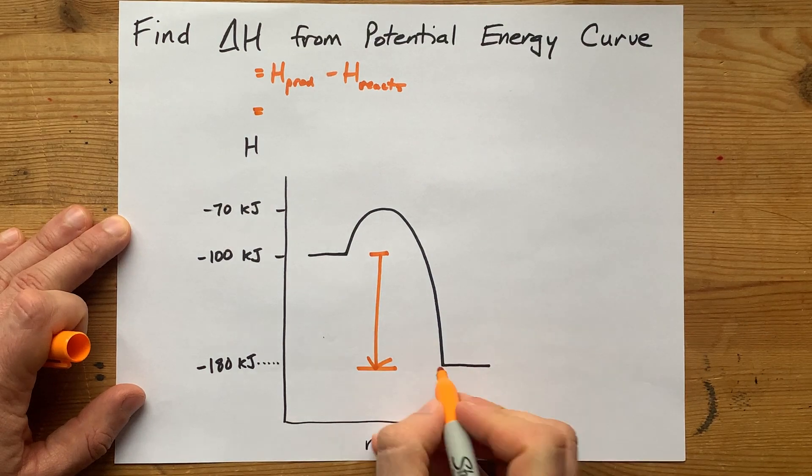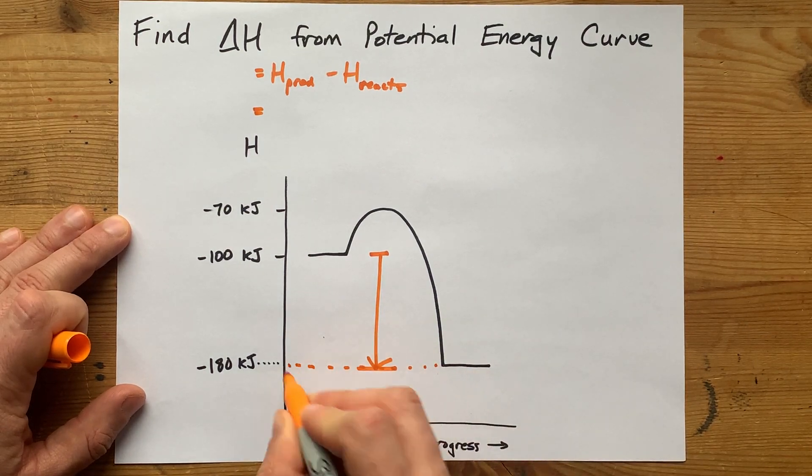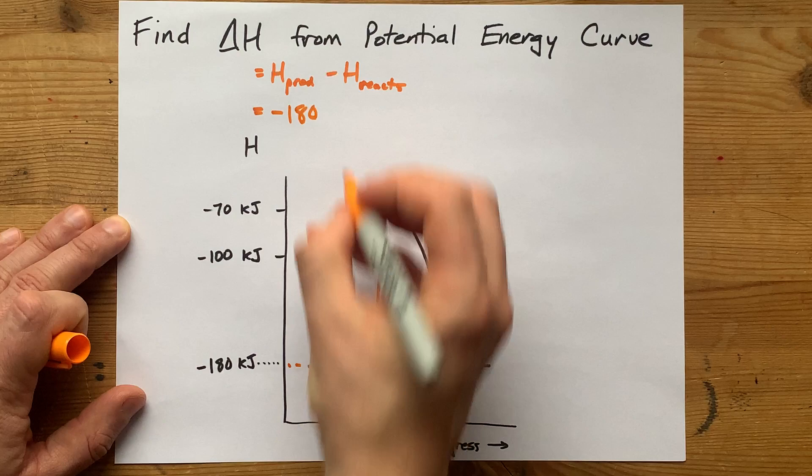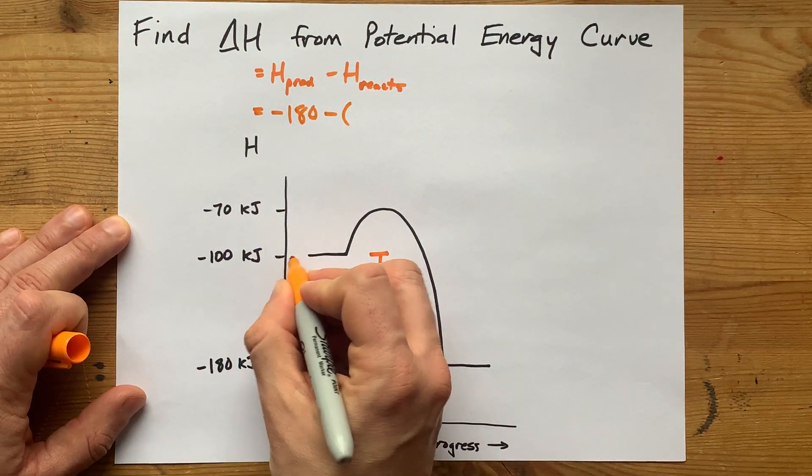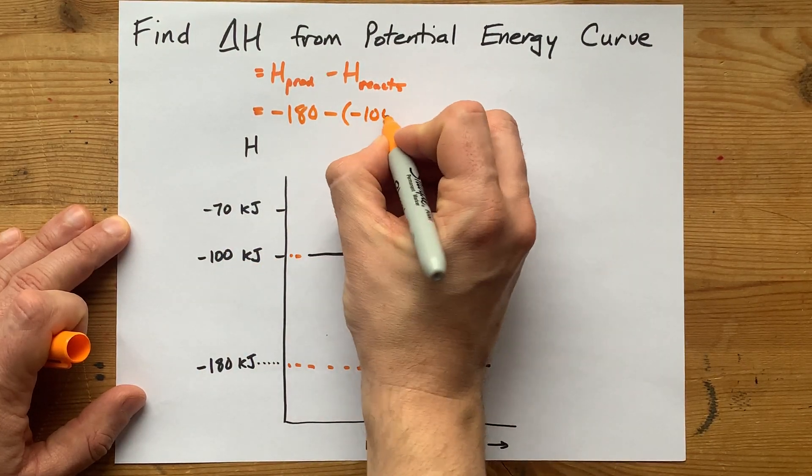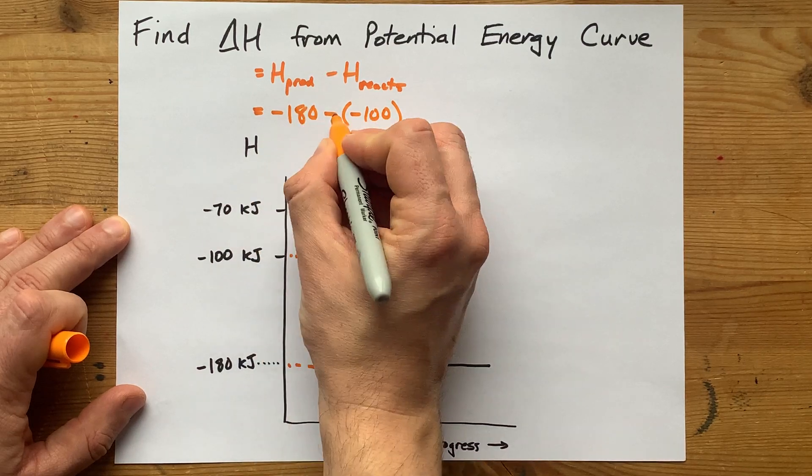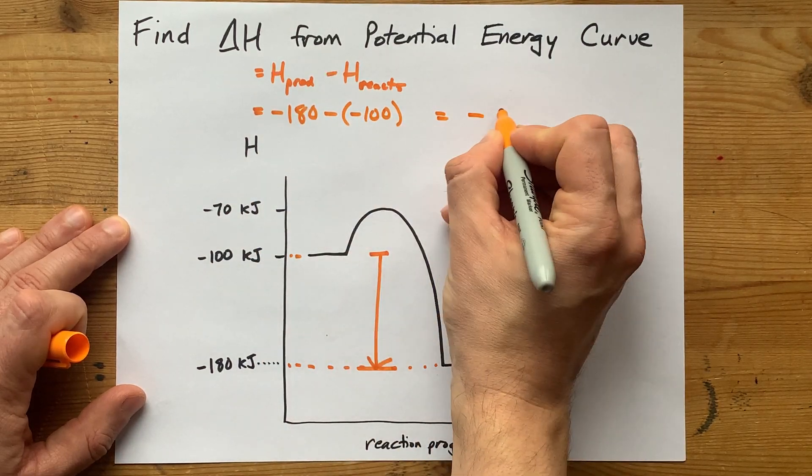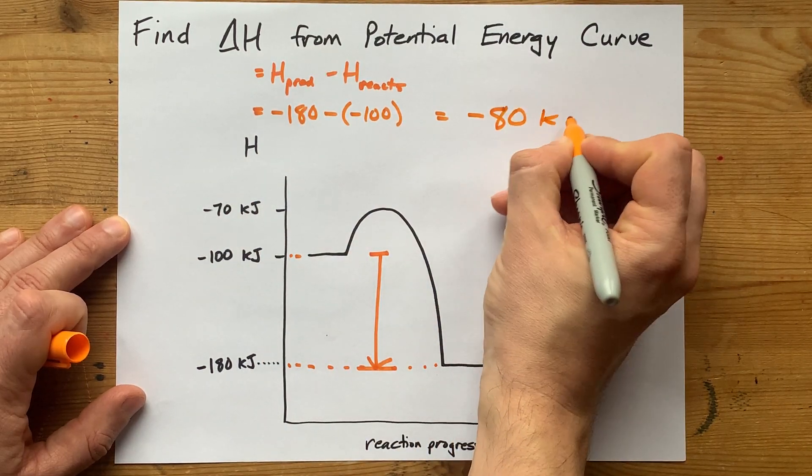My products are over here at negative 180, and my reactants are here at negative 100. Negative 180 plus 100 is negative 80 kilojoules, probably per mole.